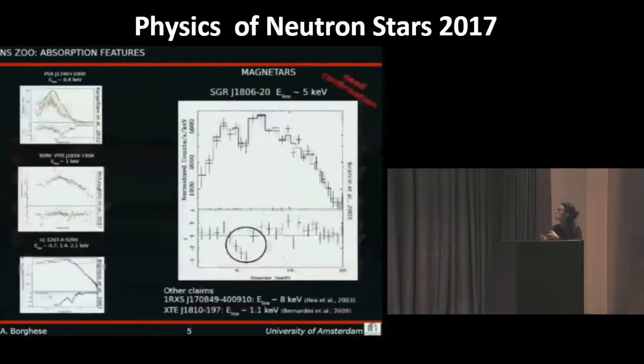The highly magnetized magnetars also show absorption features. In this case, the features can lie both in the thermal and non-thermal part of the spectrum. Moreover, the features are present both in the persistent activity or during the outburst.